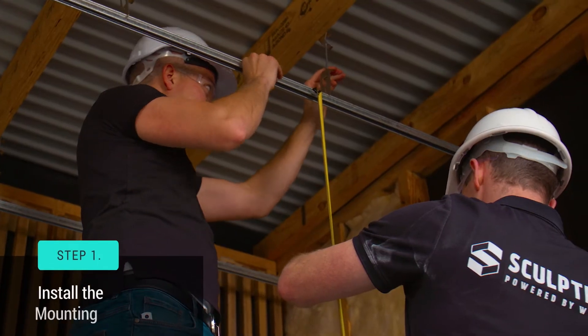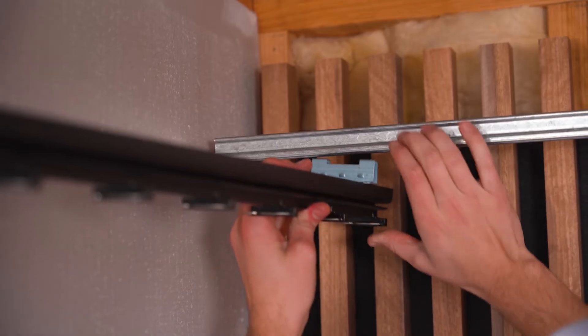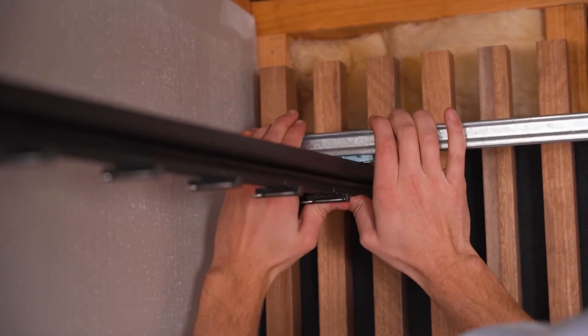The first step in the process is to install the tracks. First, attach your connector clips to the back of your mounting tracks, slide to align the TCR connector clip, and then snap it in.